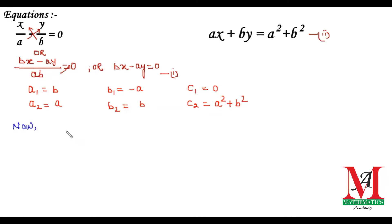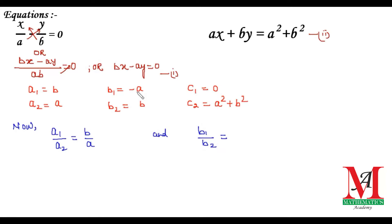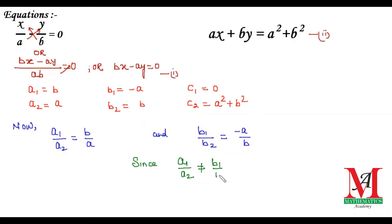We need to check first whether the solutions are consistent or not. We check a1 upon a2, and the value becomes b upon a. Then we check b1 upon b2, and the value becomes minus a over b. We see that these two values are not equal, and this is the condition for a unique solution.